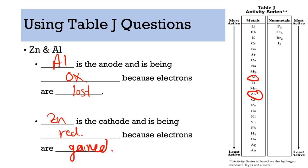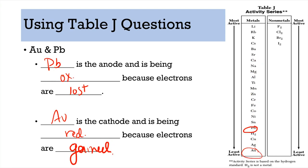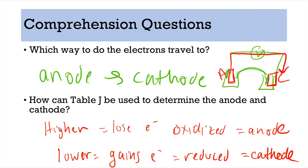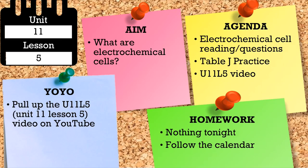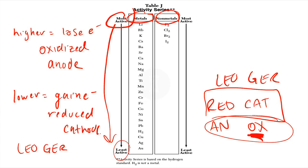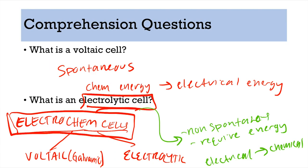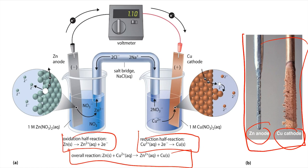That is it for right now. There's no homework tonight. Tomorrow — or next week since this is a Friday lesson — we're going to go into labeling voltaic cells in a lot more detail and practice with that.